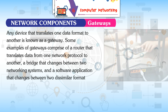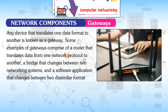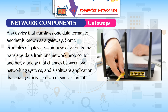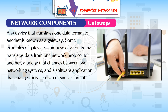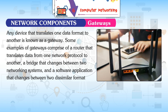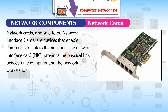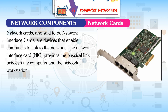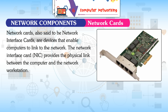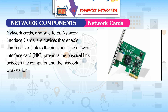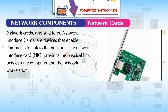Gateways: Any device that translates one data format to another is known as a gateway. Examples include a router that translates data from one network protocol to another, a bridge that changes between two networking systems, and a software application that changes between two dissimilar formats. Network Cards, also called network interface cards (NIC), are devices that enable computers to link to the network. The NIC provides the physical link between the computer and the network workstation.